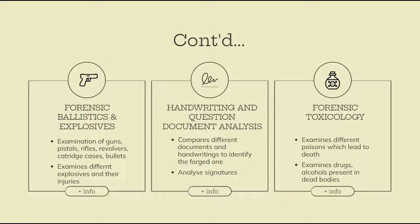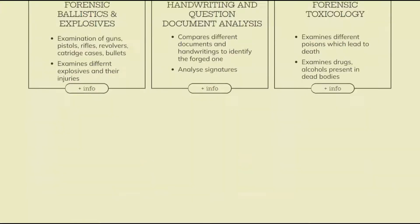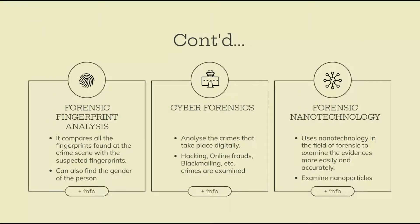Handwriting and Questioned Document Analysis: in cases of forgery of checks, legal papers, wills, etc., the handwriting and signatures of documents are examined by experts by comparing them with original ones. Forensic Toxicology: in case of death by poisoning, toxicologists examine liver fluids to identify the poison that caused death, and also examine the level and presence of alcohol and drugs in the dead body. Forensic Fingerprint Analysis: fingerprints are unique in nature and in most crimes fingerprints are found at the crime scene, so they are compared with suspects' fingerprints to find the culprit.